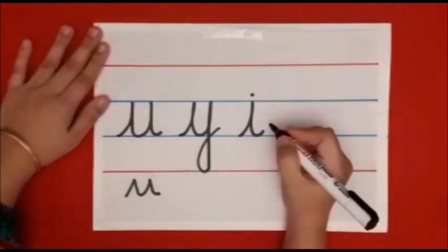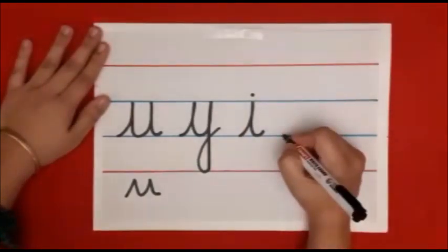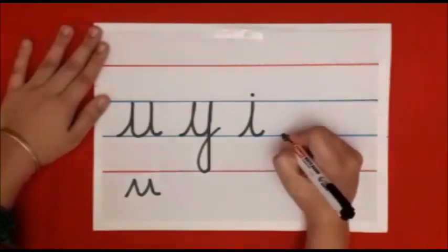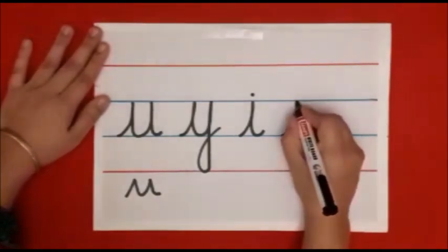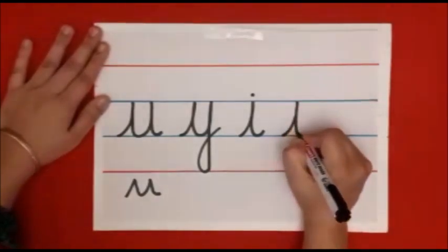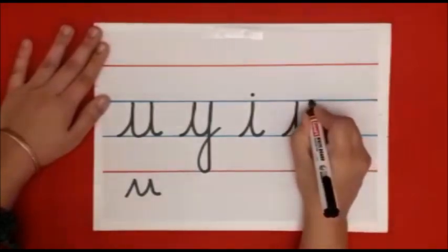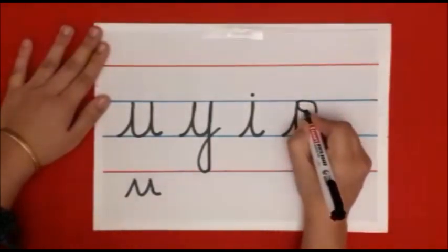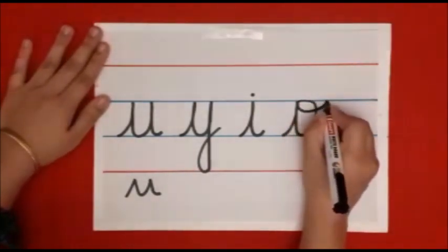Now for letter O, we will make I first. Go up, come back and now go up, go inside and out.